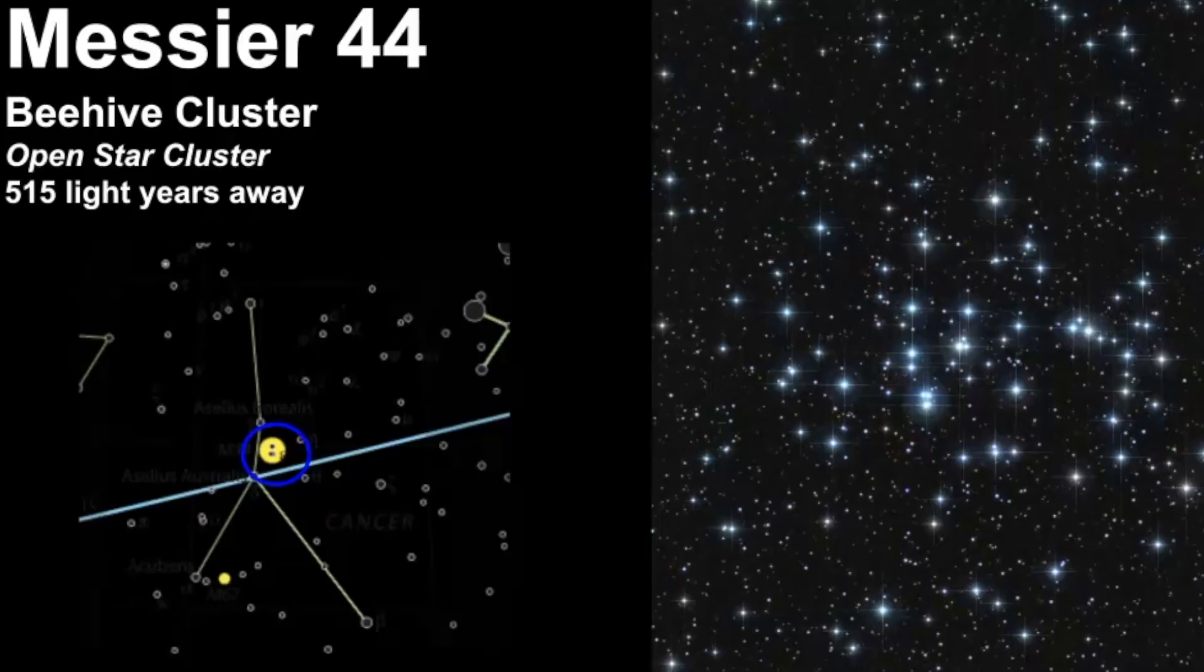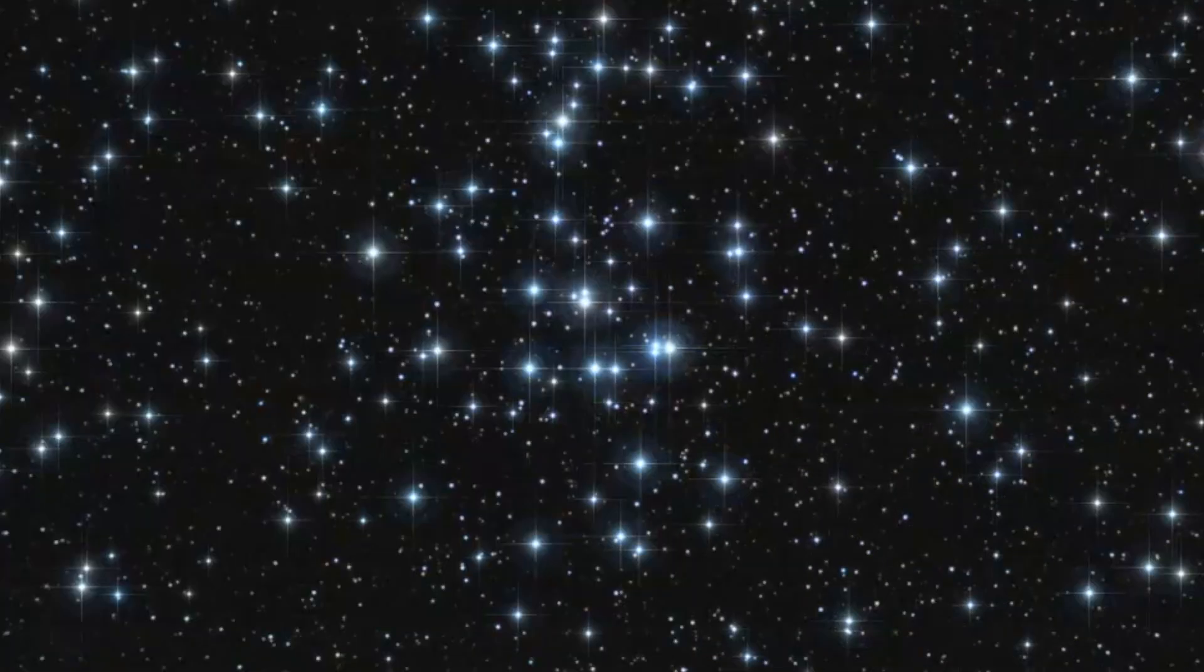Some other examples of open star clusters include the Beehive cluster in Cancer, also known as Messier 44. This is what it looks like if we were to zoom in. And here it is zoomed in even more. So again, no definitive shape here. Most of the stars here are blue, which will tell, the color of the stars really gives us some insight into the age of a star.